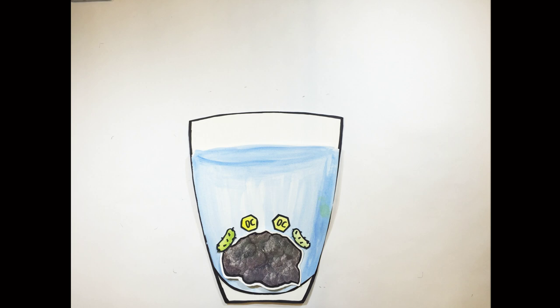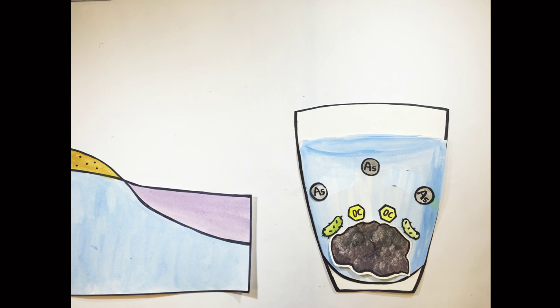However, if we add the right mix of microbial organisms and organic carbon into this cup and take out the oxygen, the mineral will break down and release arsenic into the water.